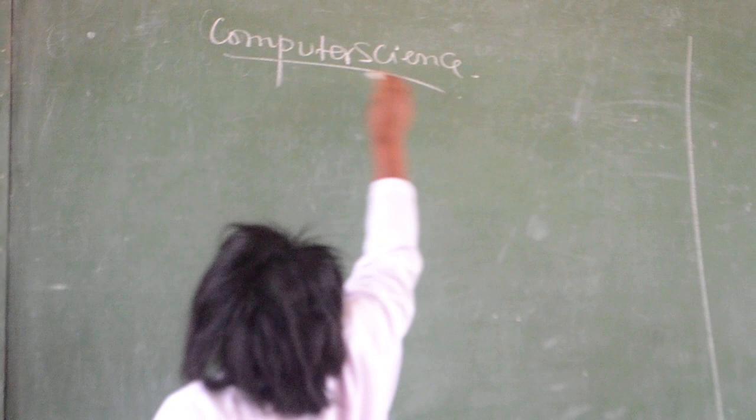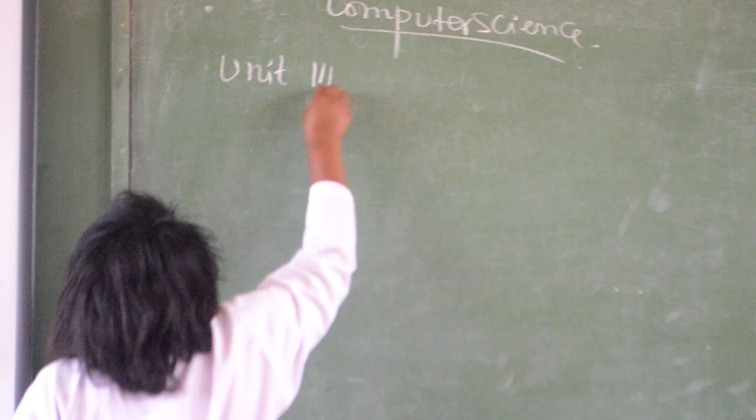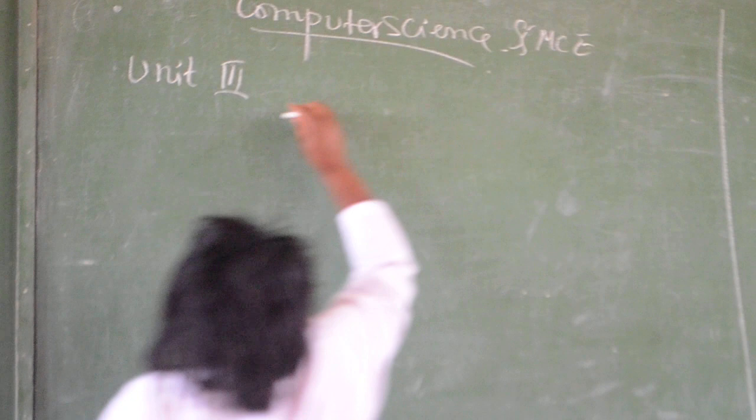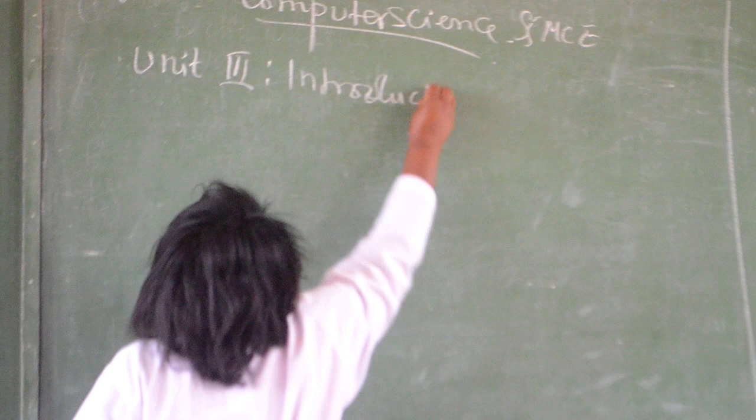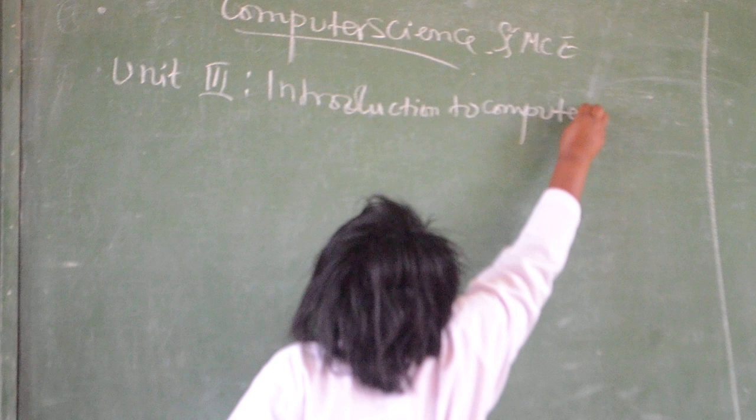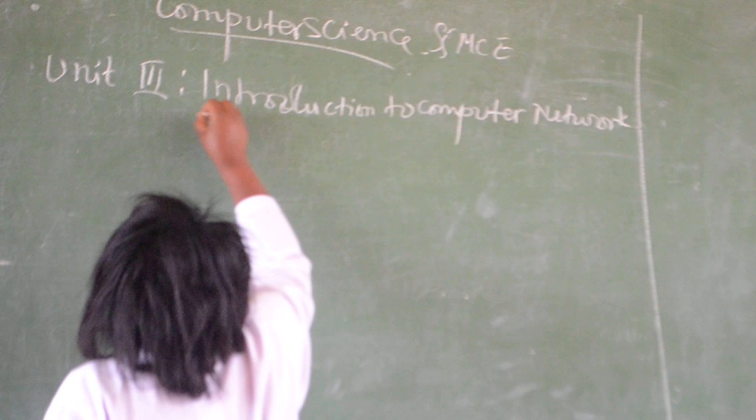This time we are going to continue our lesson in Computer Science. Now remember that we have stopped in Unity 3, which is the introduction to Computer Network. In this unit we have seen what is the network types of networks in the previous lessons.